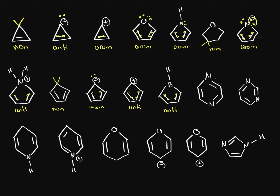Now what about this structure? Well on this nitrogen we have a lone pair, and on this nitrogen we have a lone pair. However, as you can see, the second lone pair each nitrogen has is used as a pi bond. So we have 1, 2, 3, 4, 5, 6 pi electrons total, so this is going to be aromatic.